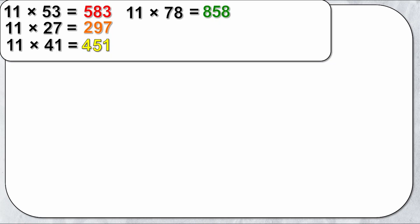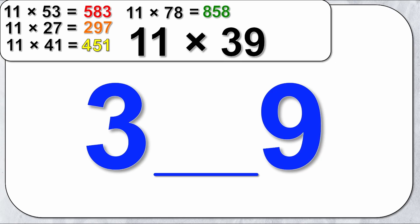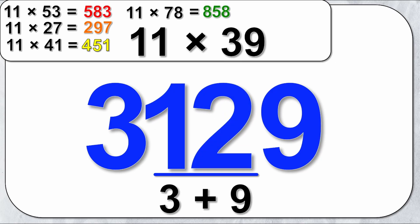Let's try another one of these harder examples. 11 times 39. I'm going to write 39, pull the numbers apart. First number is 3, last number is 9. The middle number is then added up which is 3 plus 9 which gives me 12.